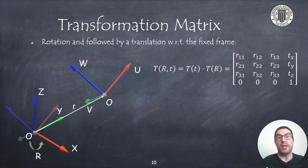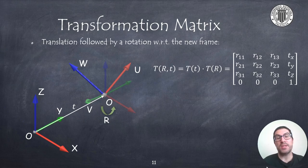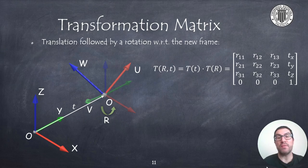In general, we will see that a transformation matrix represents the combination of a rotation followed by a translation with respect to the fixed frame. But this can also be seen in a different way, because a transformation matrix can be seen as a translation followed by a rotation with respect to the mobile frame. This is something we will see in more detail in the second part of the presentation, how to transform or compose transformations.